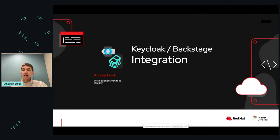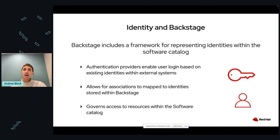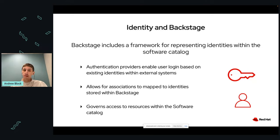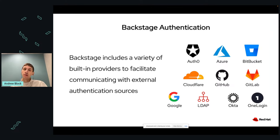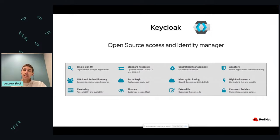So we're going to talk about KeyCloak and Backstage integration. Backstage has an entire framework for representing identities in the software catalog, which you can use for authentication to enable logins based on existing identities in external systems. You can associate those identities to entities stored within Backstage, governing access to different things in the software catalog. There are a number of providers available for Backstage — Azure, Bitbucket, GitHub, GitLab — allowing you to take your existing identity store and bring it into the Backstage ecosystem.